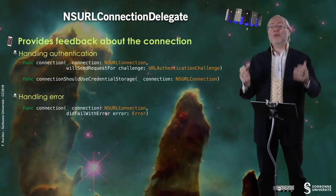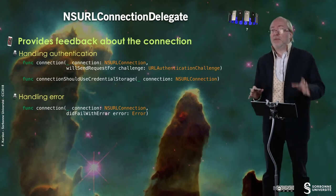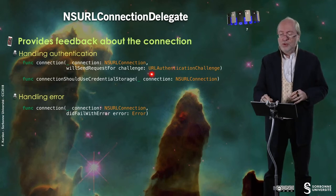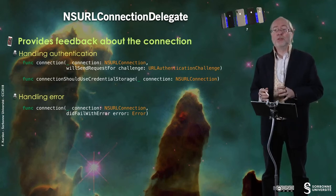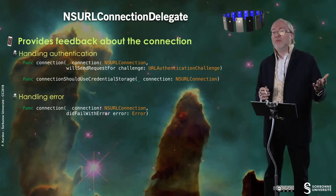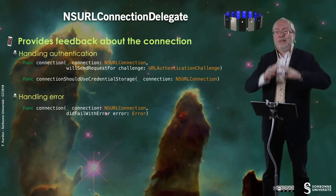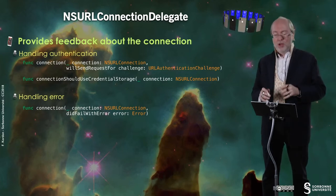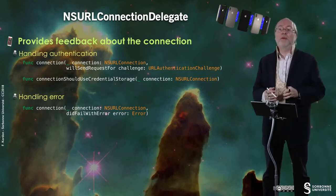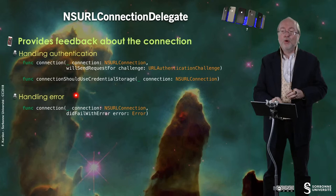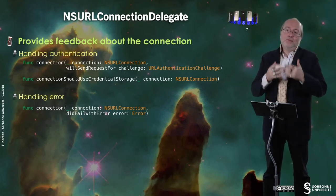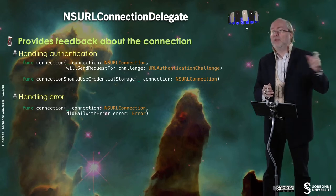Now let's have a look at NSURLConnectionDelegate, which provides feedback about the connection itself. Typically here you may handle some authentication. And in fact, in WKWebView you can find corresponding methods, so once again there are interfaces to these methods. And you also have a way to handle errors — similar things that come from this URLConnectionDelegate that was already seen.